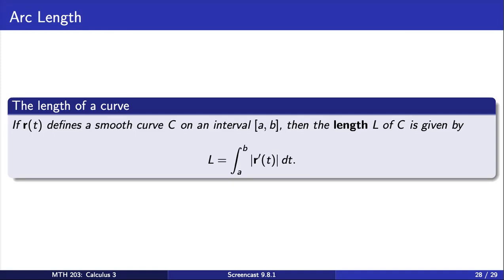If R of t records the position of a moving object, then its derivative, R prime, is the object's velocity. And the magnitude of R prime is then its speed. So this formula says that if we simply integrate the speed of an object traveling over the curve, we find the distance traveled by the object.